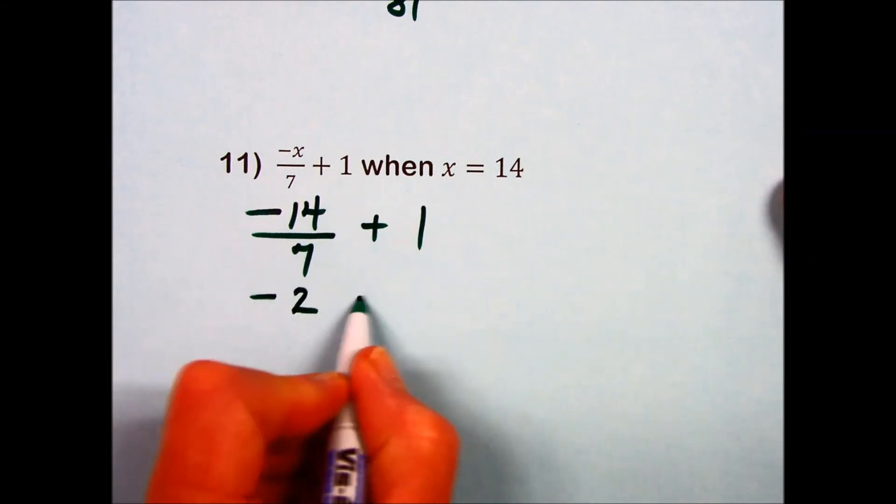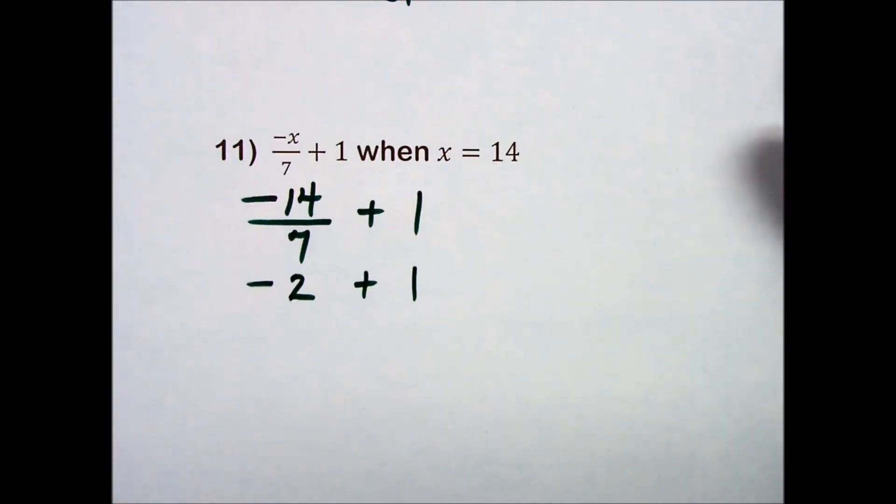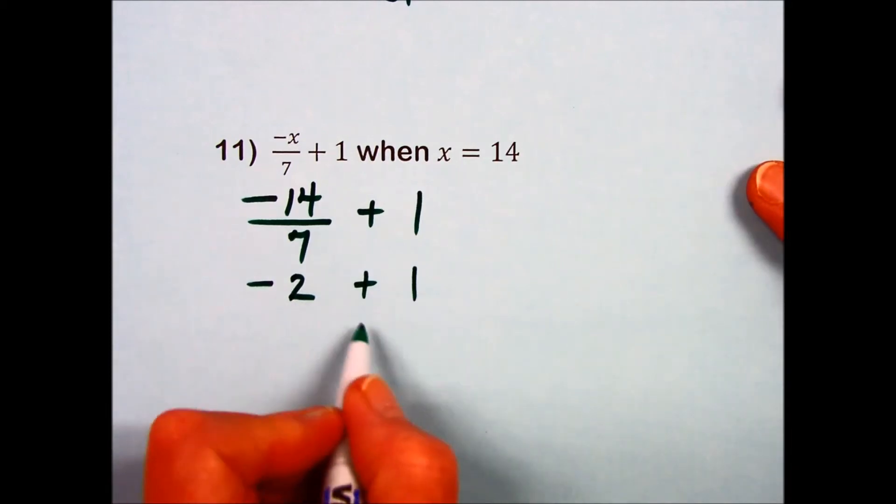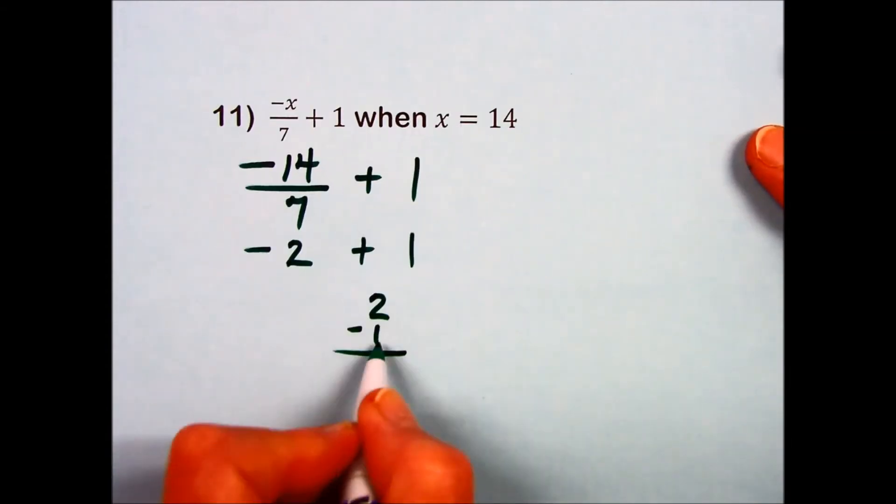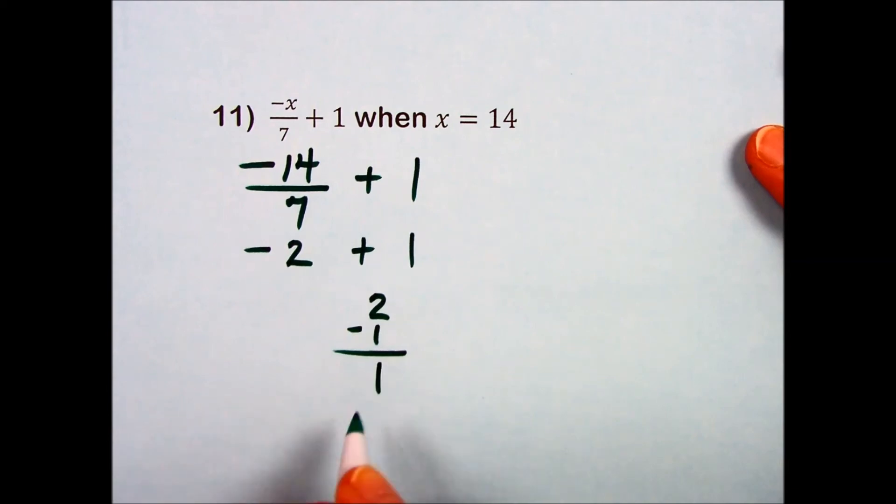We're now adding different signed numbers and using the rule for adding different signed numbers, we ignore the signs and subtract the numbers. So subtracting the smaller from the larger, I get a 1.